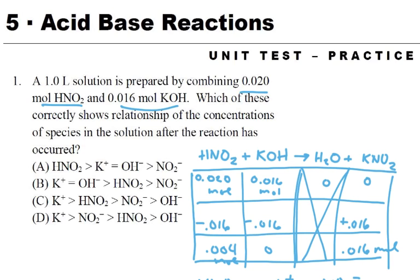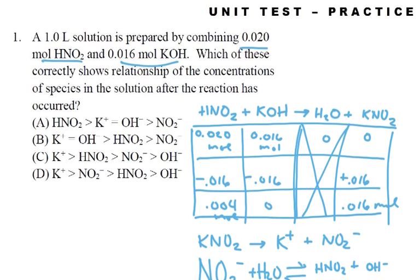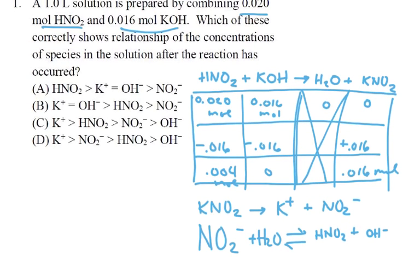The question asks which shows the relationship of the concentrations. Looking at the amounts: I have HNO2 and KOH, I put in my moles, and we can see we're going to use up all of our KOH — none of that will exist — but I will have some HNO2 left over. I'm forming KNO2, which breaks up into ions, giving me K+ and NO2-. And that NO2- will continue to react with water, forming a little bit of HNO2 and a little bit of OH-.